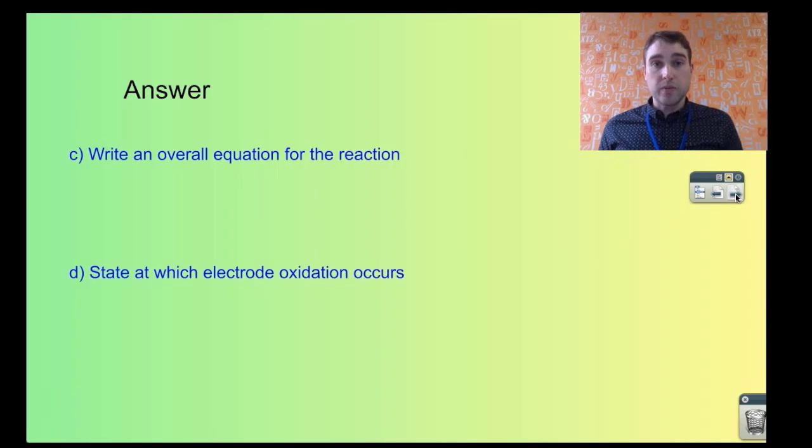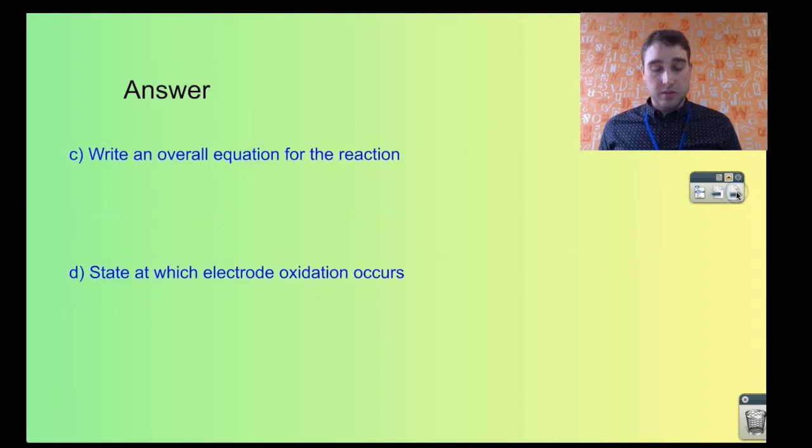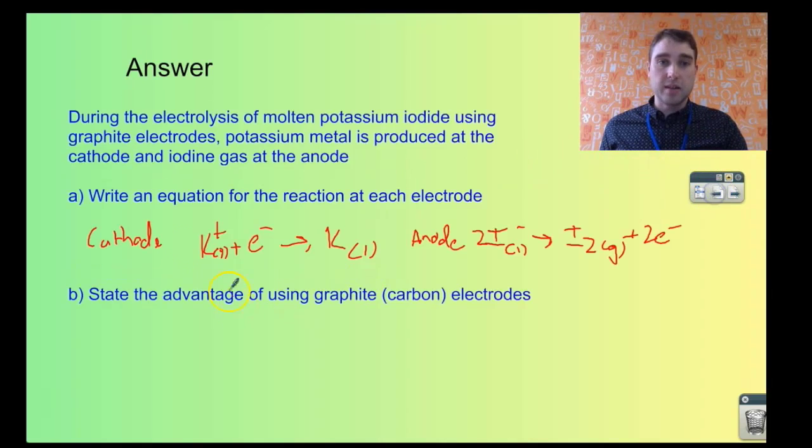Write an overall equation for the reaction. So what we need to do is add our two half equations. I need to double everything that's with my potassium. So it's going to be 2K+ plus 2I- goes to 2K plus I2. All I'm doing is doubling what I had for my cathode reaction and adding that to my anode reaction, then cancel out the electrons because they should cancel out from both sides.